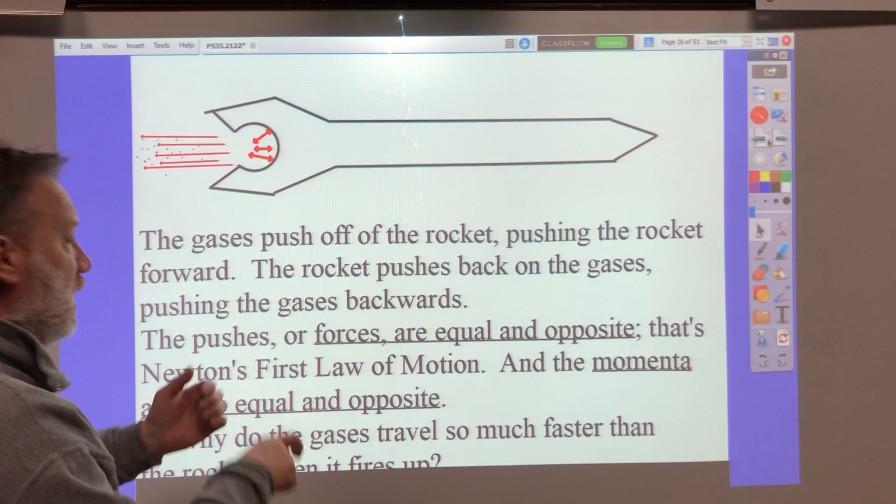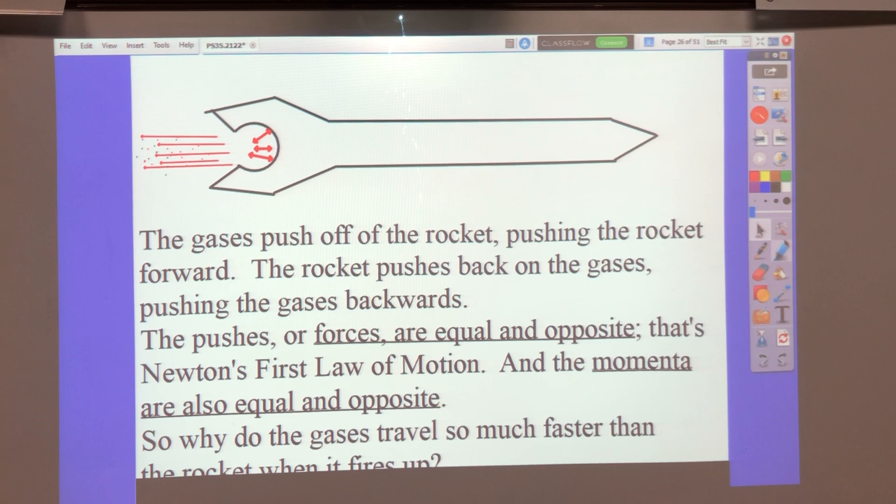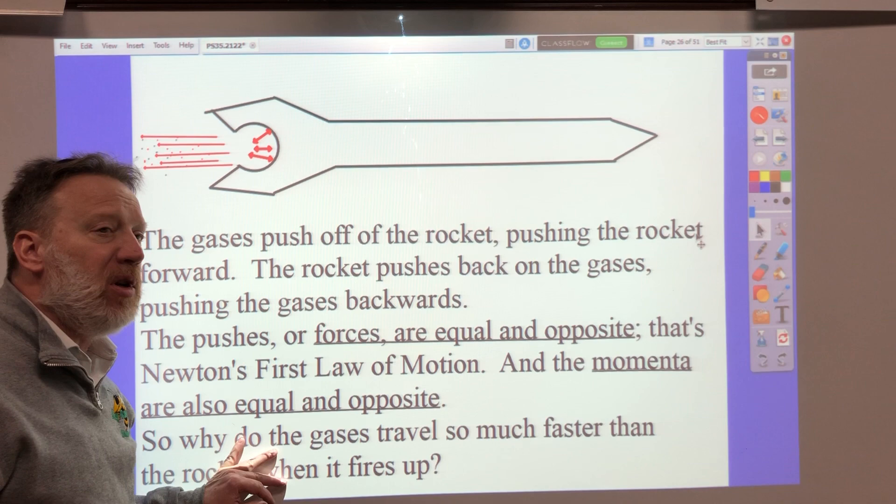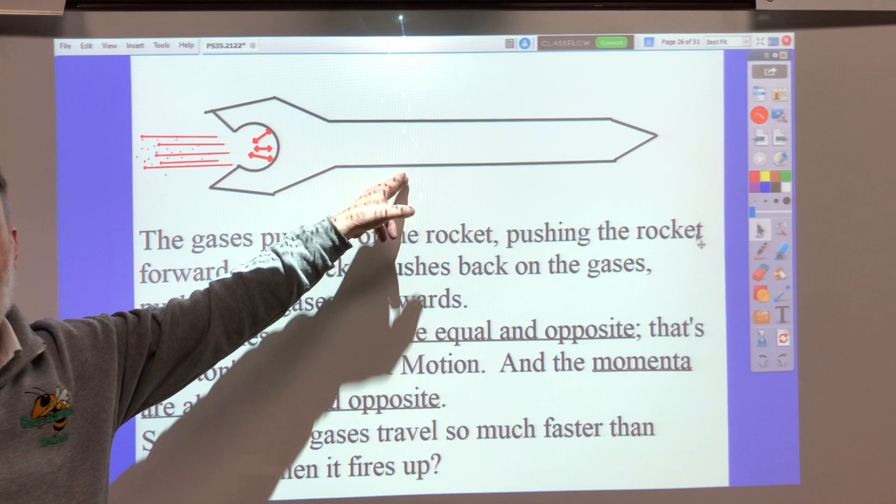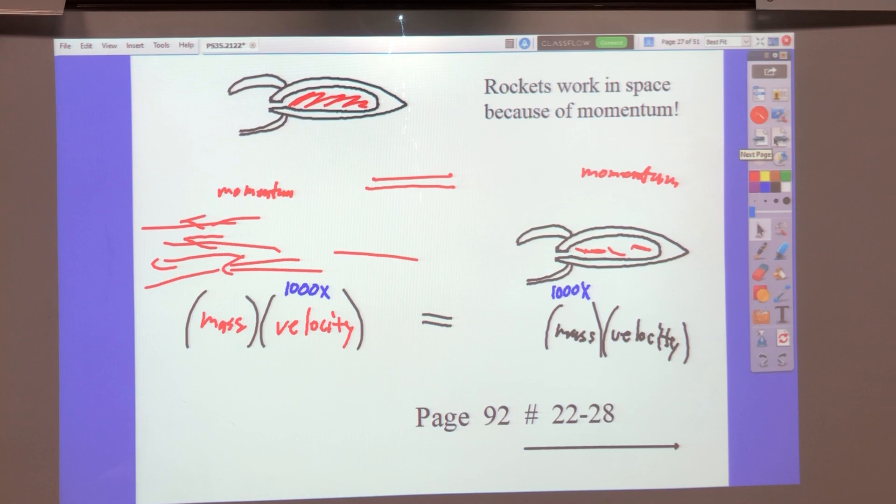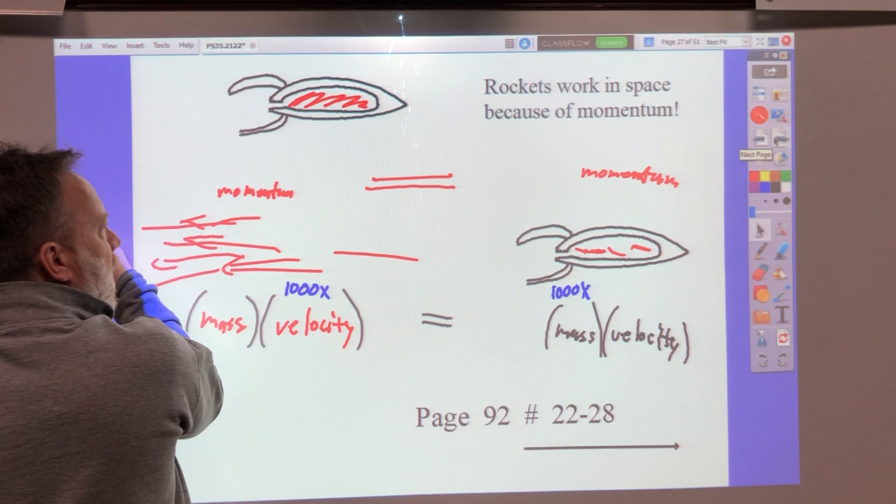So the forces are equal and opposite. That's Newton's first law. And the momentum, or momenta, that's plural of momentum, are equal and opposite. So why do the gases travel so much faster? Because they're so much lighter, less mass compared to the heavy rocket.